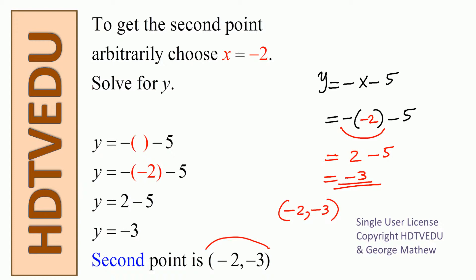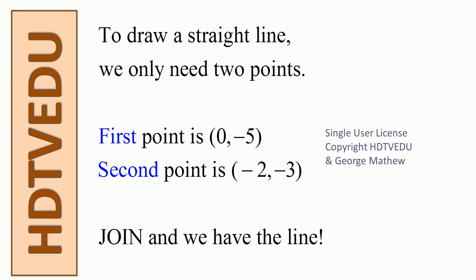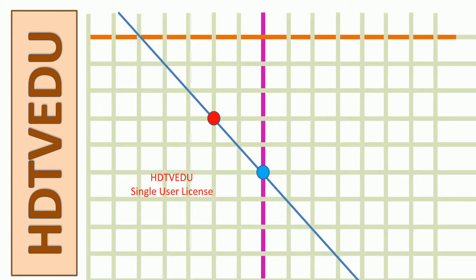We now have two points — join those and we get the line. To draw a straight line we only need two points. First point is 0, negative 5, and second point is negative 2, negative 3. We join those two points and we have the line.